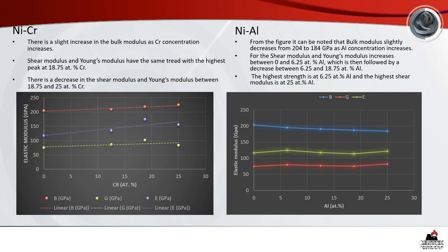Looking at the mechanical properties starting with nickel-chrome, there is a slight increase in bulk modulus as chromium concentration increases, as indicated by the red graph in the nickel-chrome elastic modulus diagram. The shear modulus and Young's modulus tend to have the same behaviour with the highest peak at 18.75 atomic percent chromium, followed by a decrease between 18.75 and 25 atomic percent chromium.